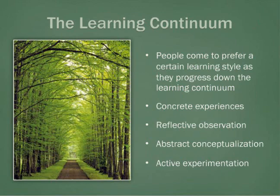Kolb's model of learning said that learning could be seen on a continuum and that a person would move through the continuum over time. As a person would come to prefer a learning style, they would rely on that style and use it more and more. Kolb's continuum is built on four premises: concrete experiences, reflective observation, abstract conceptualization, and active experimentation.